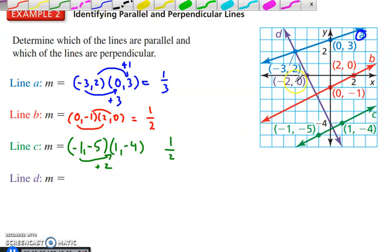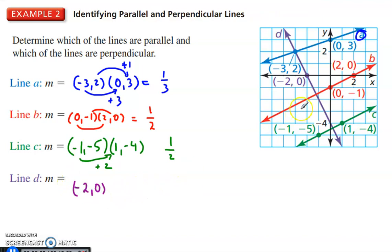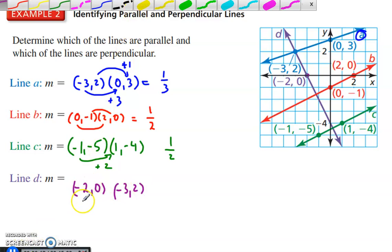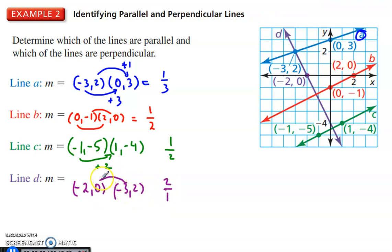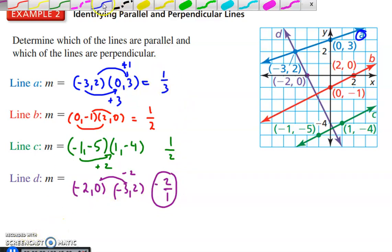All right. And then finally, line D. We have negative 2 and 0. And then we have another point here. Negative 3 and 2. Negative 3 and 2. Want to find the slope there. So the change in y is 2, up 2. And the change in x is over 1. And actually, sorry, we're going down 2. So that's negative and up 1. So negative 2 over 1.